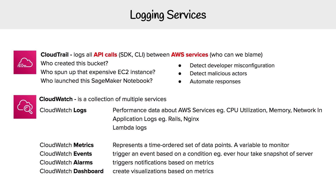Then you have CloudWatch Alarms, and these trigger notifications based on a metric. You specify a threshold, and when that threshold is breached, the alarm gets triggered and it will send you an email or a text message, however you specify.